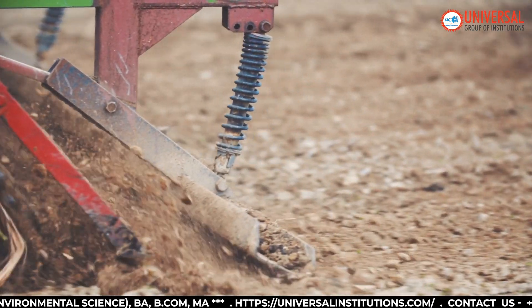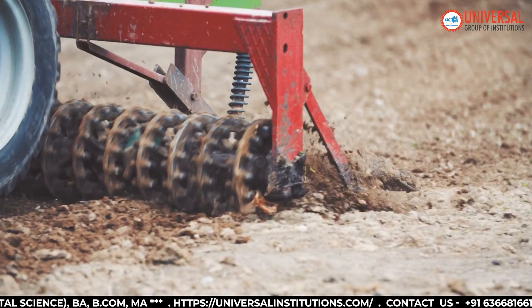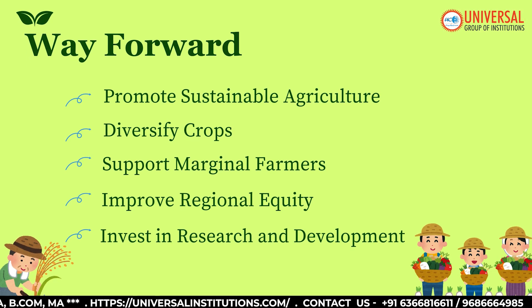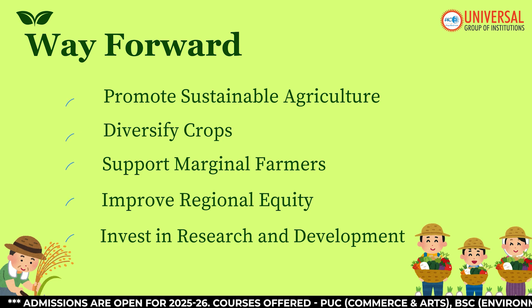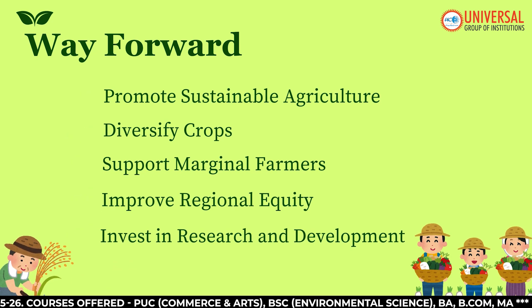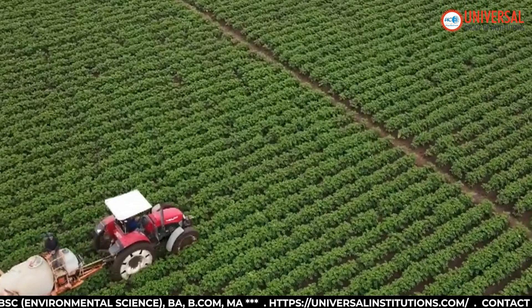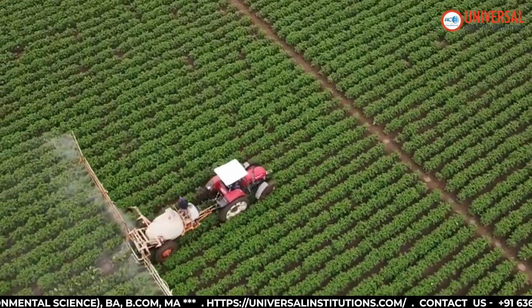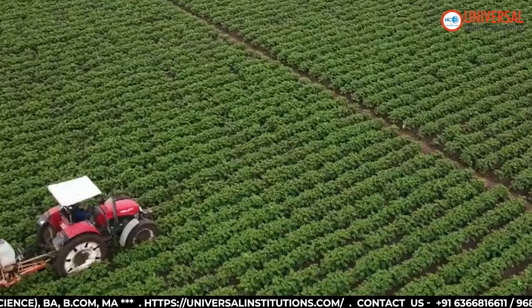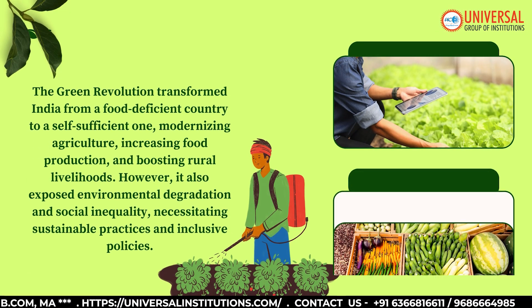To address these challenges, several steps can be taken. First, promote sustainable agriculture by adopting eco-friendly practices like organic farming and integrated pest management. Second, diversify crops — focusing on pulses, oilseeds, and horticulture to meet nutritional needs. Third, support marginal farmers by providing affordable access to technology and inputs for small-scale farmers. Fourth, improve regional equity by extending agricultural advancements to underdeveloped regions. Finally, invest in research and development to develop climate-resilient crops and efficient irrigation techniques.